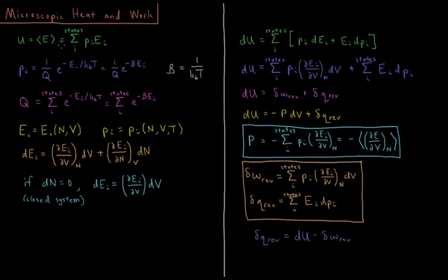Our internal energy is a sum over all possible states of the system of the probability of that state times the energy of that state. The probability that the system is in a given state is 1 over the partition function times the Boltzmann factor, e to the minus energy over Boltzmann constant times temperature — or 1/q times e to the minus beta·Ei, where beta is 1 over the Boltzmann constant times temperature, the inverse temperature.